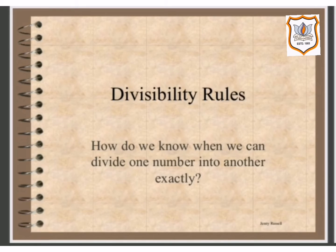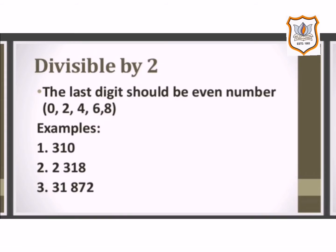How do we know when we can divide one number into another exactly? For this, certain rules are to be followed. The first rule is divisible by 2. A number is divisible by 2 if it has any of the digits 0, 2, 4, 6, or 8 in its units place or 1's place.